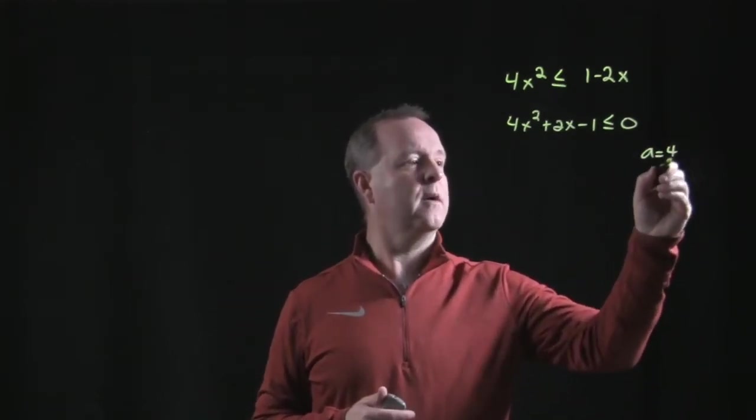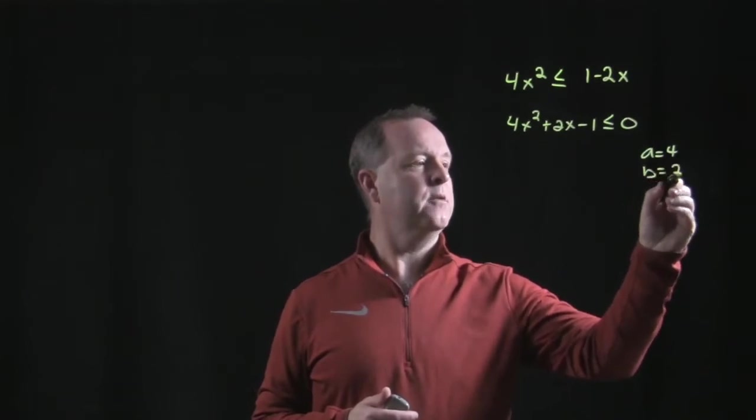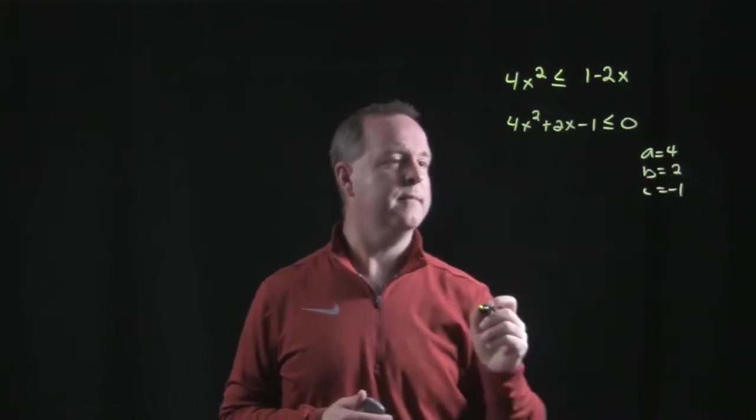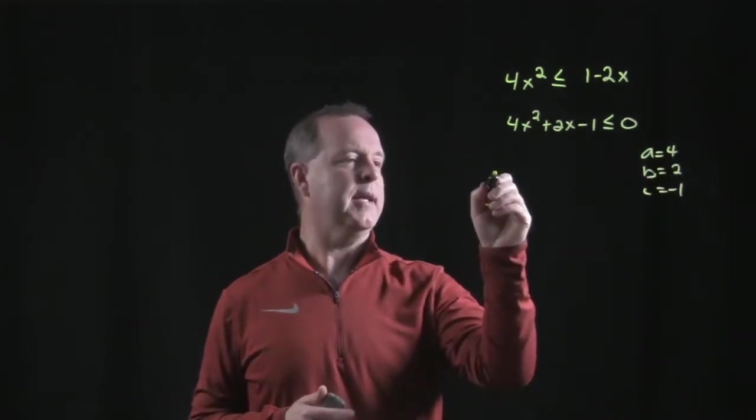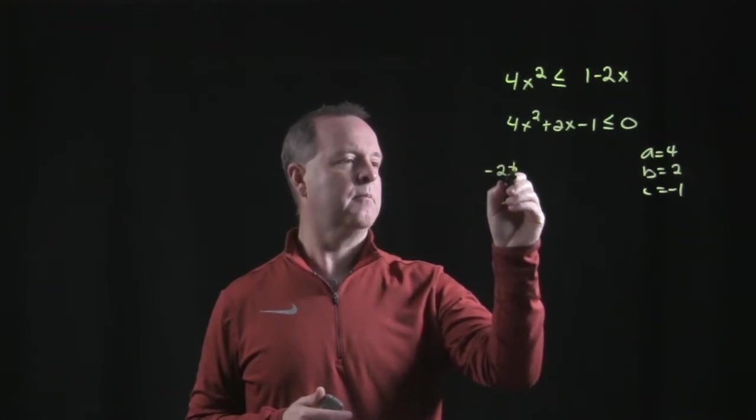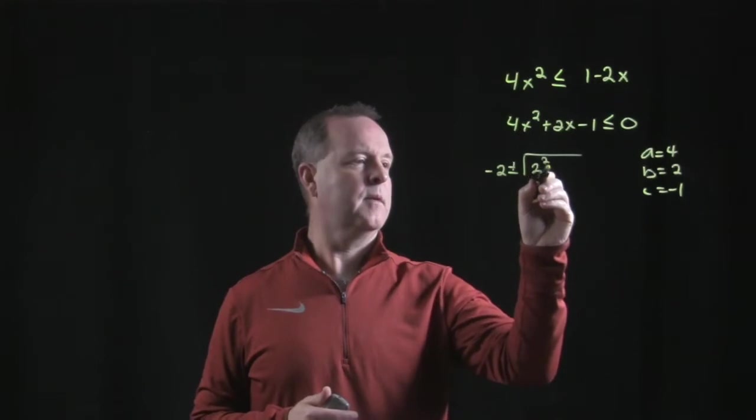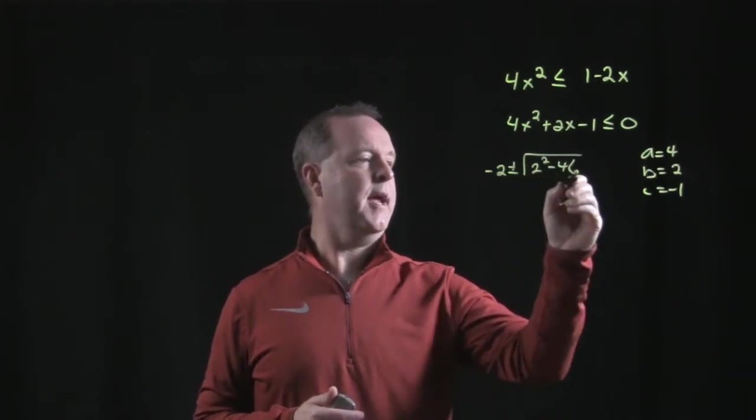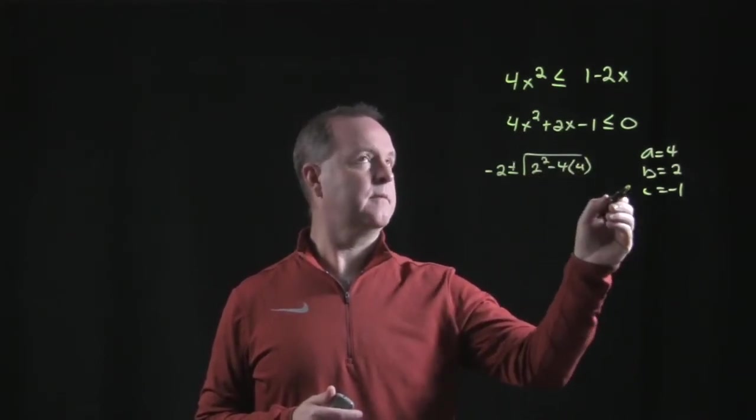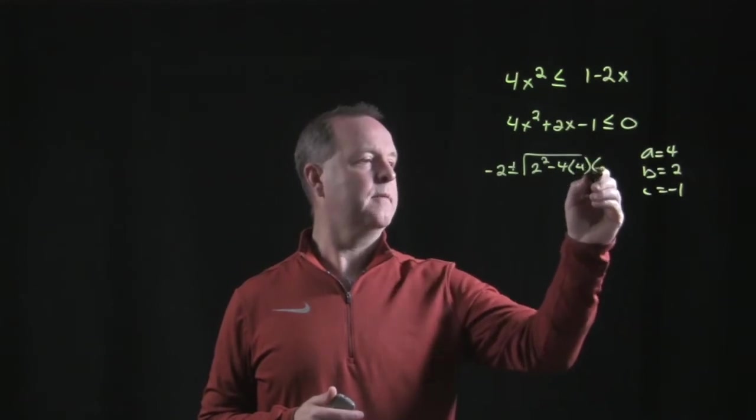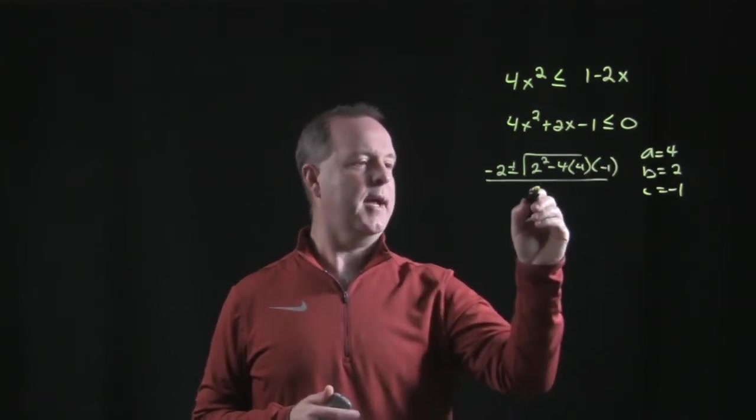So a would equal 4, b is 2, c equals negative 1. So minus b plus or minus b squared minus 4ac times negative 1 all over 2 times a.